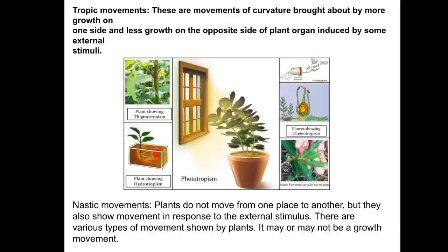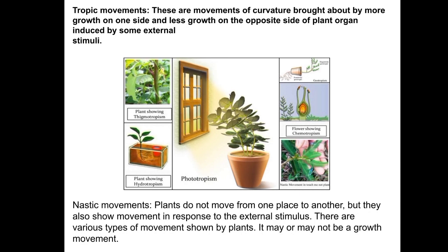There are two types of plant movements: spontaneous movement and induced movement. In spontaneous movement, plant movements take place without any external stimuli and are termed autonomic movements. In induced movement, some plant movements are caused in response to certain stimuli. Induced movement is further divided into two types: tropic movement and nastic movement.